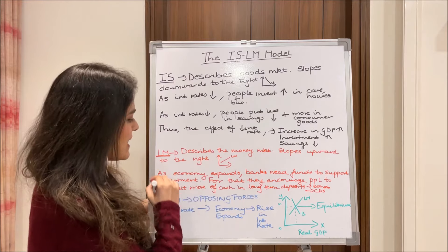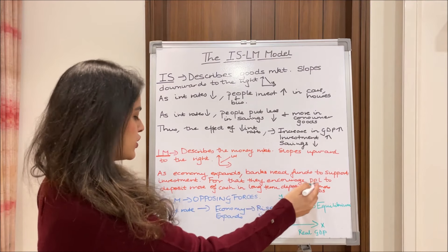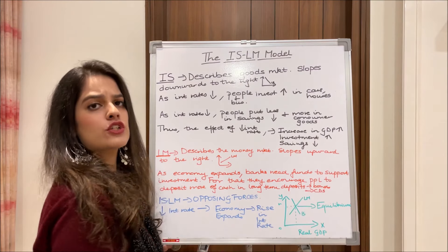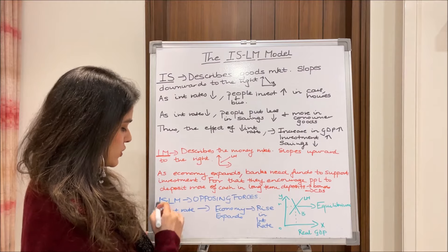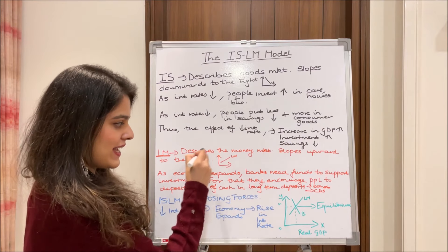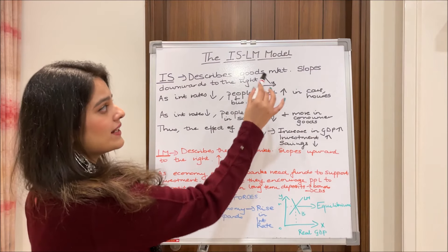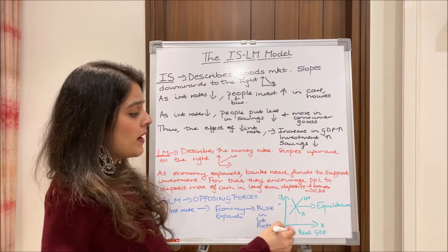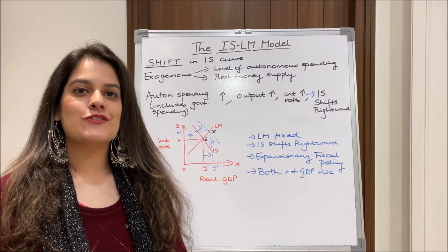The LM curve describes the money market and slopes upward to the right, similar to the shape of a supply curve. As the economy expands, banks need funds to support investment, so they encourage people to deposit more cash in the bank through long-term deposits like bonds and certificates of deposit. IS and LM have opposing forces: as interest rates fall, the economy expands, and when the economy expands, interest rates rise. The point where the IS and LM curves meet is the equilibrium point, where the market is balanced.